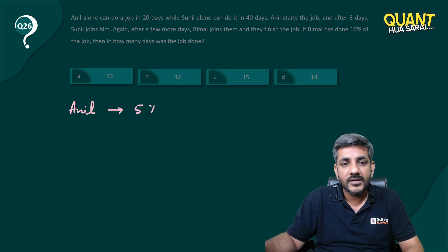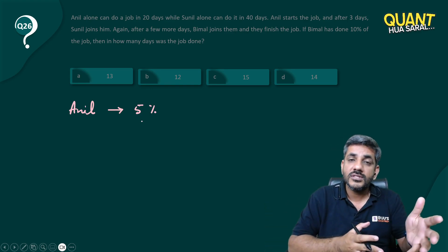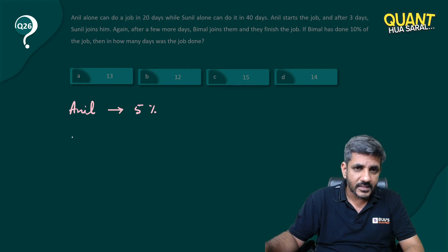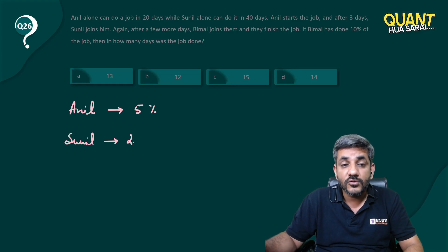Total job is 100. Anil is doing the job in 20 days, that means he is doing 5% of the job every day. Similarly, when I talk about Sunil, Sunil can do a job in 40 days, so he is doing 2.5% of the job in a day.